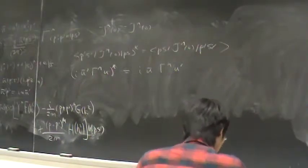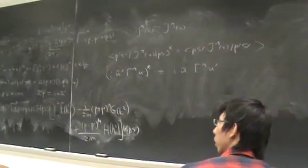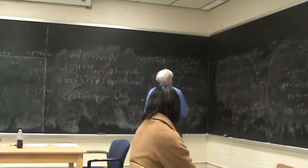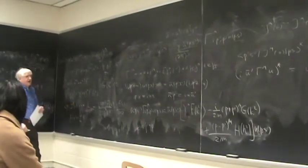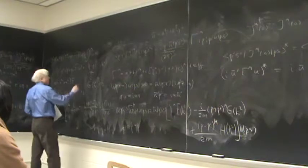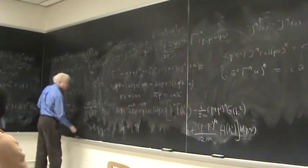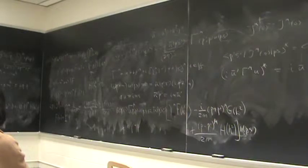This trick allows one to rewrite the current. Using this relation, the expression u-bar-prime [gamma_mu f minus (i/2m)(p plus p prime)_mu g] u can be rewritten as u-bar-prime [minus i over 2m (p plus p prime)_mu (f+g) plus i over 4m times the commutator [gamma_mu, gamma_nu] times (p prime minus p)_nu times f] u. This is an alternative parameterization in terms of f1 and f2, where the analog gives f1(0) equals one.